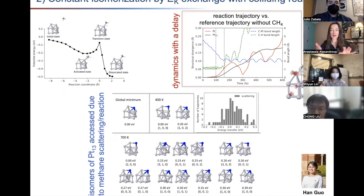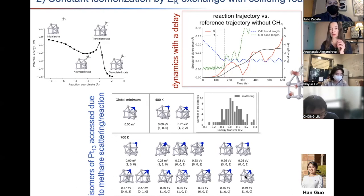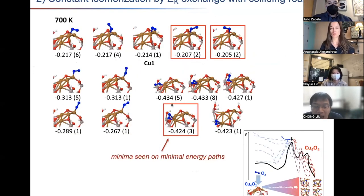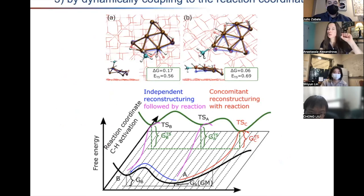We directed the reagent at the catalyst and observed intramolecular vibrational energy redistribution. What we find is that due to this collision and momentum exchange with just one reagent molecule, we can create all sorts of isomerization events. For Pt13, all different isomers are populated just due to multiple trajectories of methane colliding with it. Similarly for dioxygen attacking a copper cluster on silica — all sorts of minima appear that are not on the minimum energy profile. Due to kinetic energy exchange with reagents at high pressures, there is constant isomerization triggered.